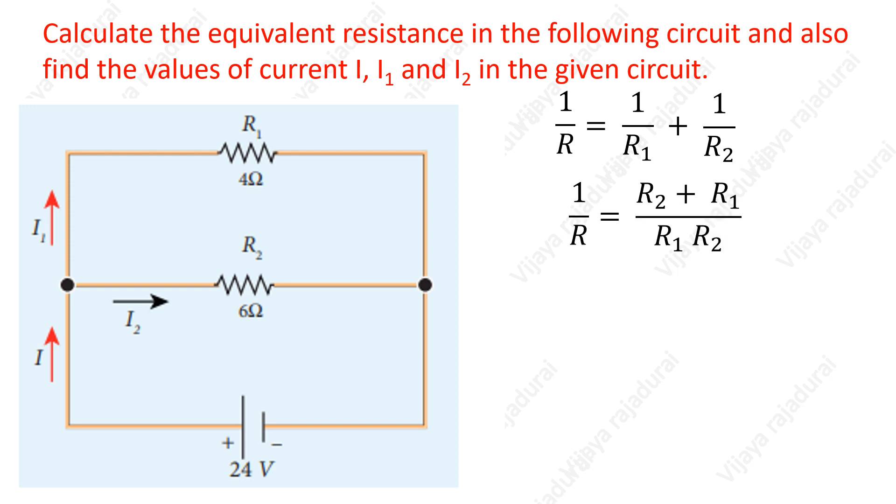Taking LCM we get this, substituting this R1 and R2 values we get 10 by 24. We need to find out the equivalent resistance.